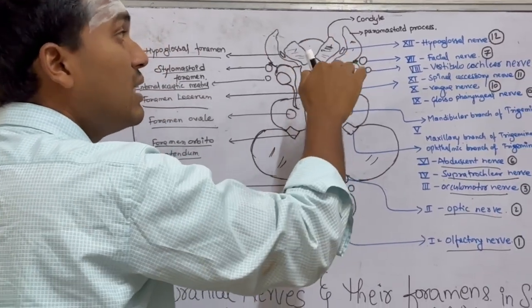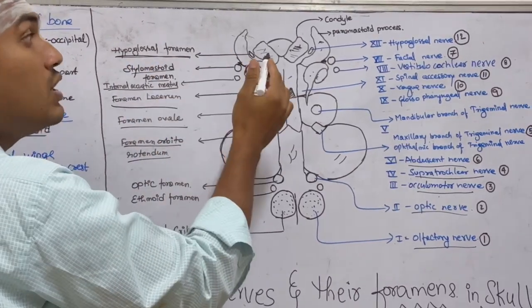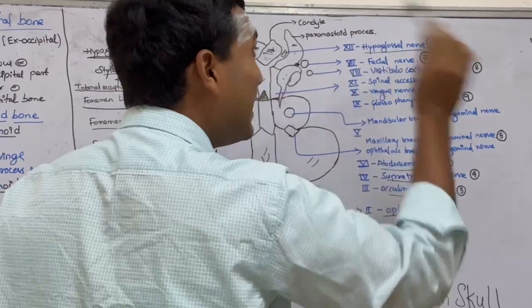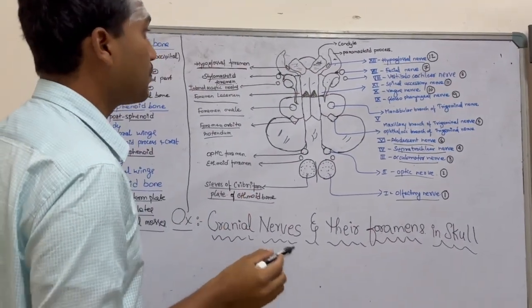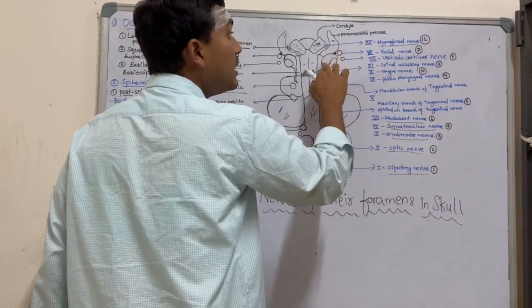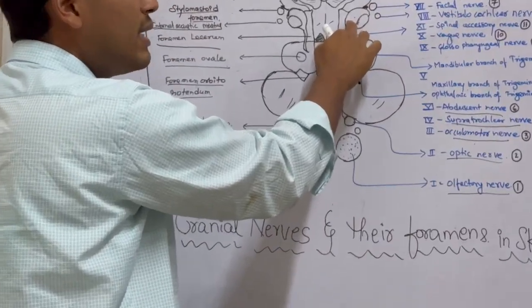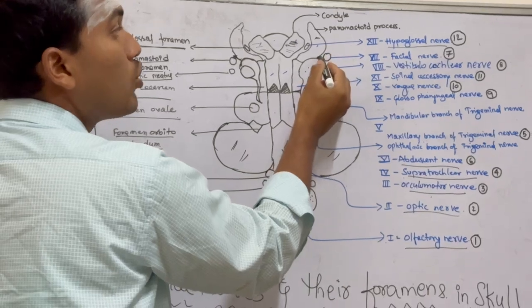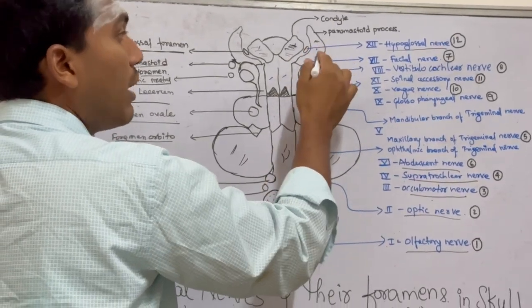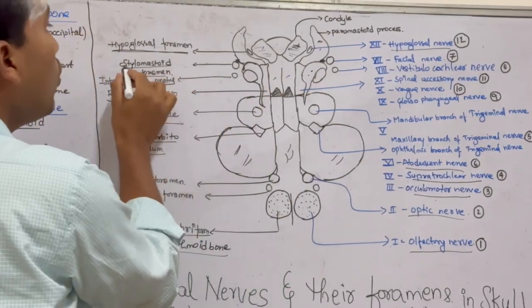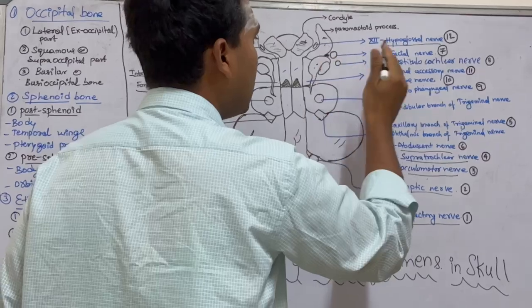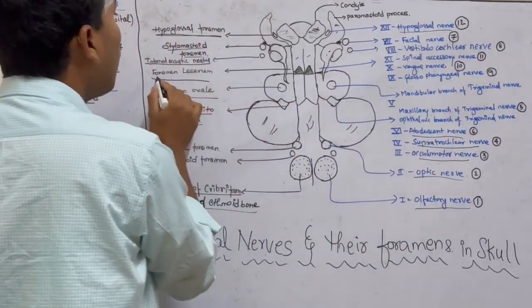Coming to the facial nerve — this is the tympanic part of the petrous temporal bone. This is the mastoid process. Between the tympanic part and the mastoid process we get the stylomastoid foramen, through which the seventh cranial nerve, that is the facial nerve, arises.